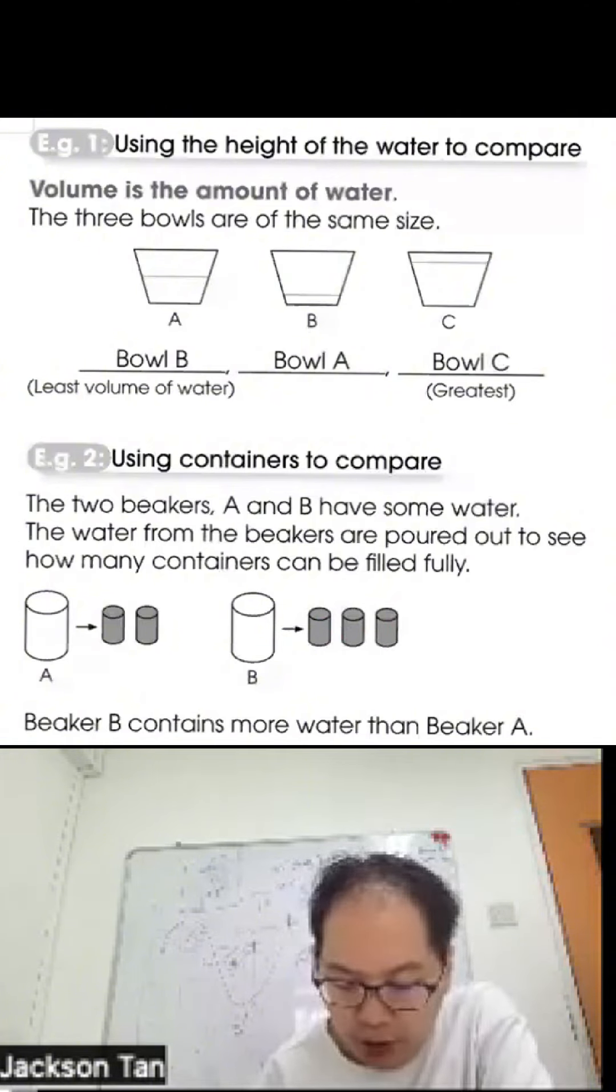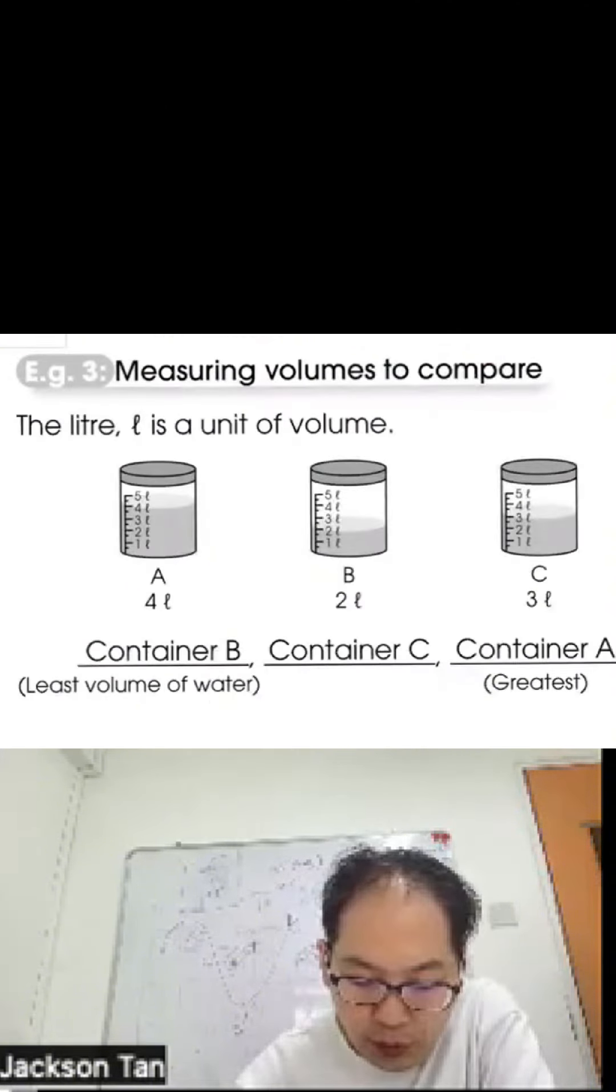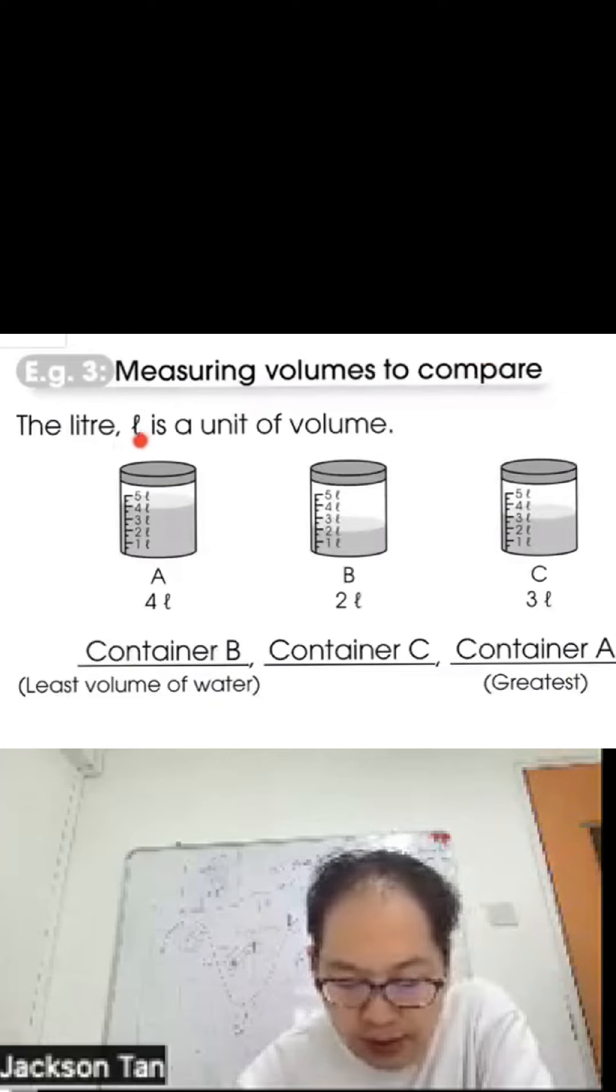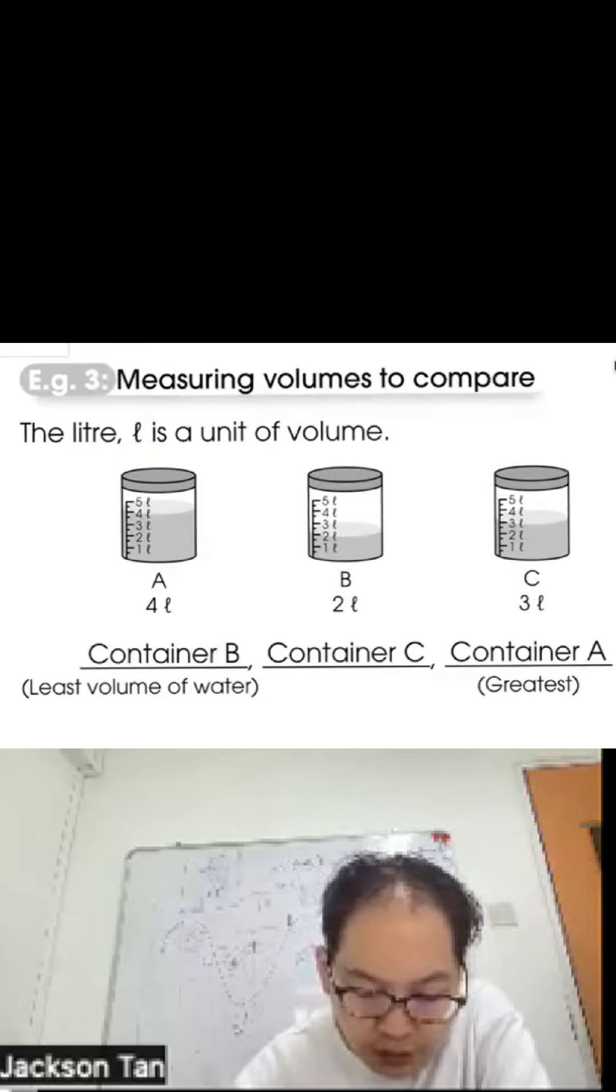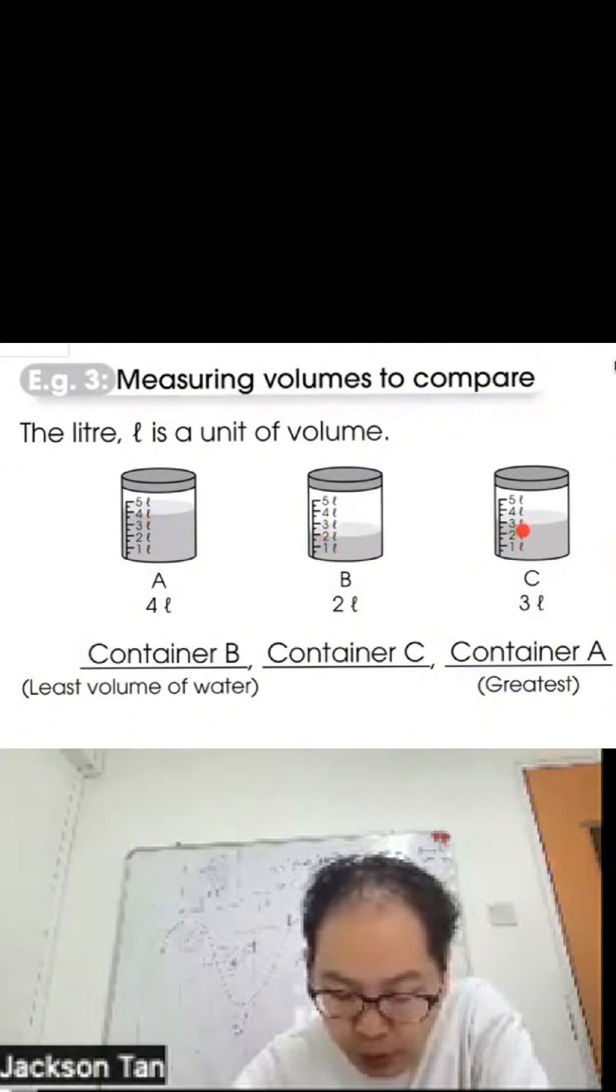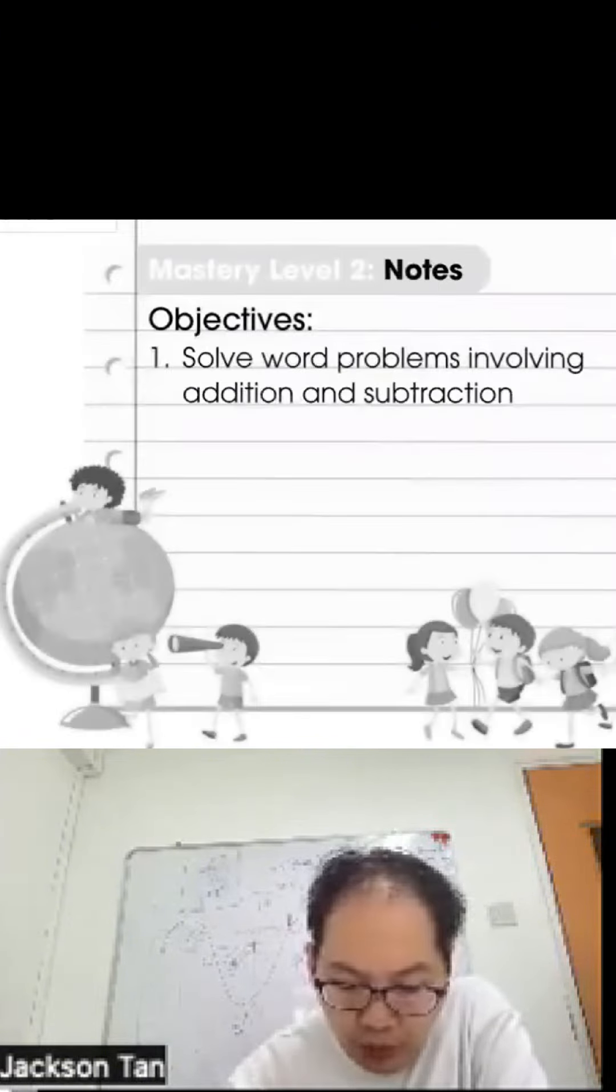Measuring volume to compare - the liter is a unit for volume. Container A is four liters, B is two liters, C is three liters. So we arrange from the least volume of water: that will be B, followed by C, then A.